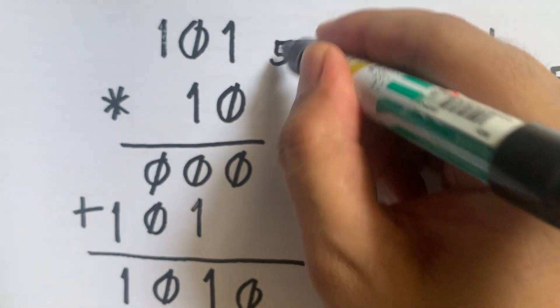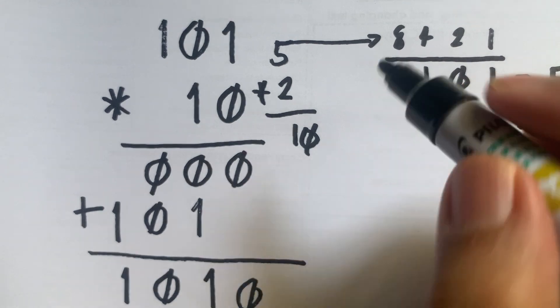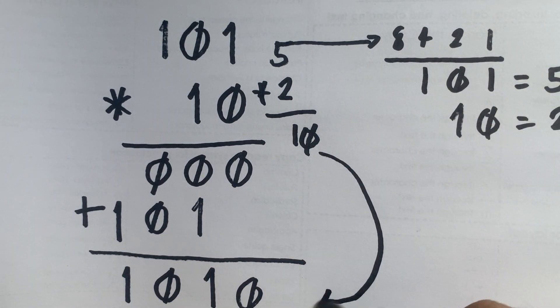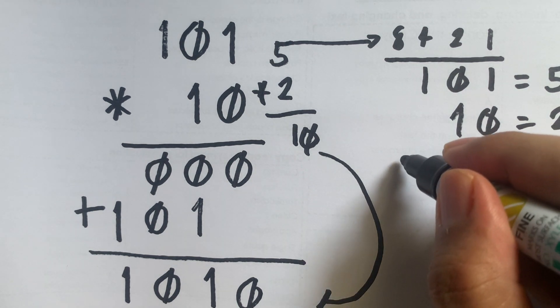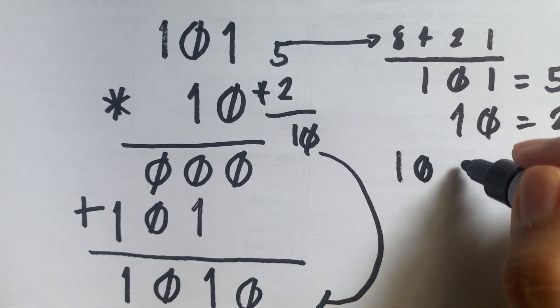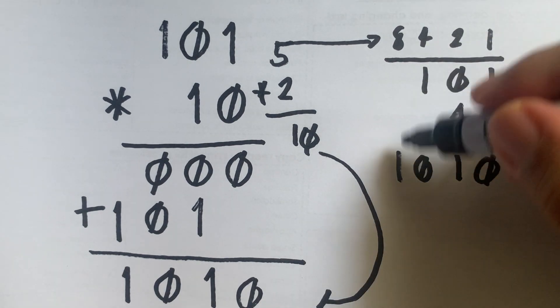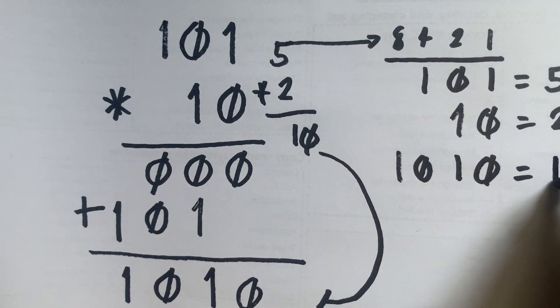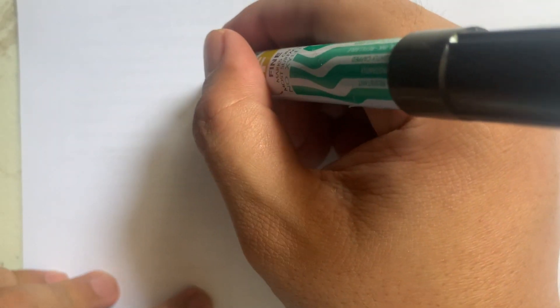We are actually multiplying 5 by 2, so the answer must be 10. Let us check if 1010 is equivalent to 10. We rewrite 1010 under the positional values. The positions with 1 correspond to 2 and 8, so we add 8 plus 2 and get 10. Our answer is correct.